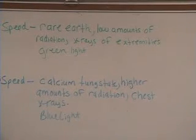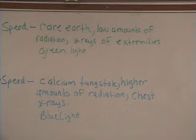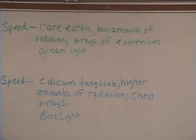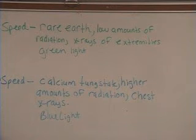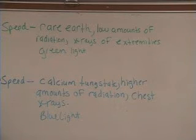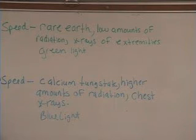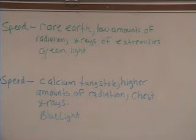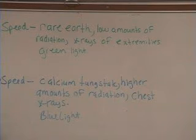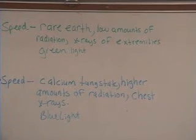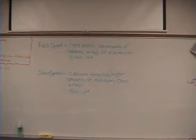Slow speed film is also called calcium tungstate. It requires more radiation, so if you're using calcium tungstate film, you're going to turn up the mA more. For example, if you're doing a chest x-ray, you'll probably use at least 150 mA, maybe 200 mA. I wrote it in blue because it's sensitive to blue light — there will be a blue flash of light inside the x-ray cassette when you take a picture with that type of film. There could be several questions on the test based on these notes about the two types of film.